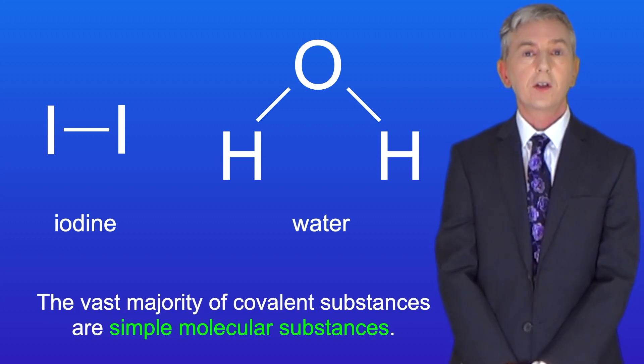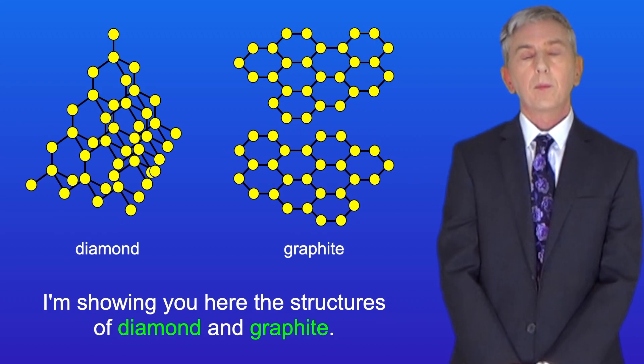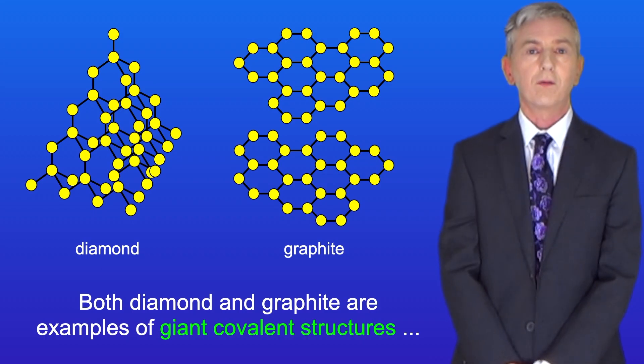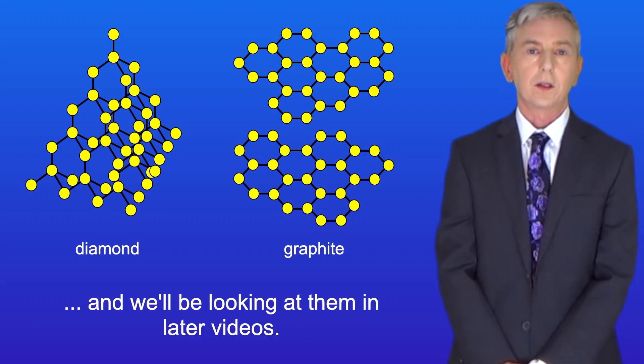The vast majority of covalent substances are simple molecular substances. I'm showing you here the structures of diamond and graphite. Both diamond and graphite are examples of giant covalent structures and we'll be looking at them in later videos.